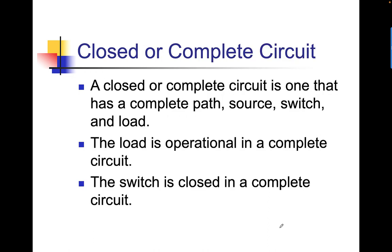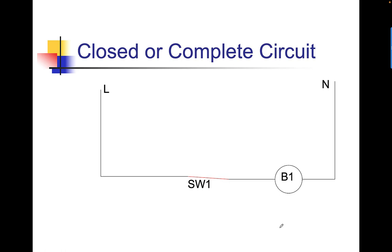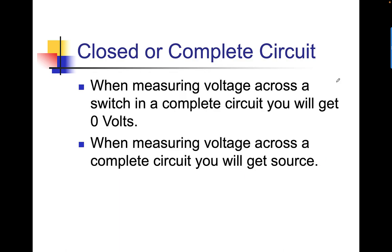A closed or complete circuit is one that has a closed or complete path — a source, switch, and a load. The load is operational in a complete circuit, and the switch is closed. Our current or electrons can flow through the complete circuit from line through SW1, through the bulb or the load, and back to neutral. When measuring voltage across a switch on a complete circuit, you get zero volts. When measuring voltage across a complete circuit, you'll always get source.